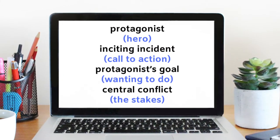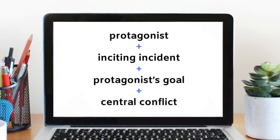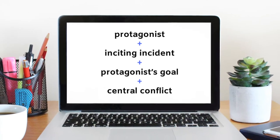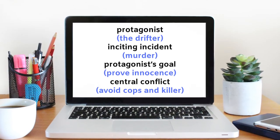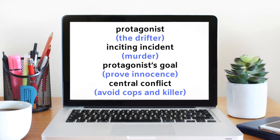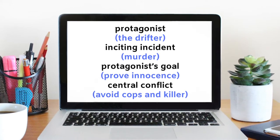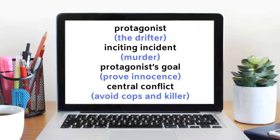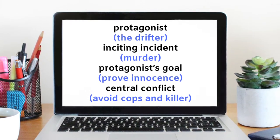A logline can be written in that order. For example: 'A drifter who's been accused of murder tries to prove his innocence while trying to avoid the police and the real killer.' If we break that down: the protagonist is the drifter; the inciting incident is the murder he has been accused of; the protagonist's goal is to prove his innocence; and the central conflict is to avoid the cops and the real killer.